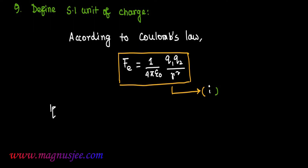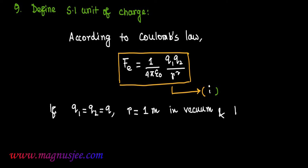Now, if Q1 = Q2 = Q and R = 1 meter in vacuum — meaning the charges are separated by a distance of 1 meter in vacuum — and the value of electrostatic force is 9 × 10⁹ Newton.